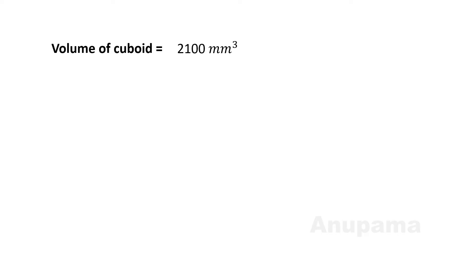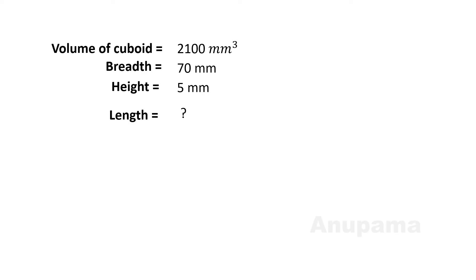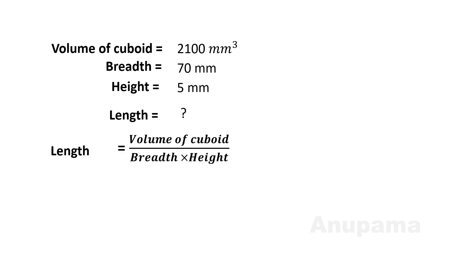Volume of cuboid equals 2100 mm³, breadth equals 70 mm, height equals 5 mm — find the length. Using the formula: length = volume ÷ (breadth × height) = 2100 ÷ (70 × 5). Seven 3s are 21, so we simplify: 2100 ÷ 70 = 30, and 30 ÷ 5 = 6. So the answer is 6 millimeters. You can similarly find breadth or height if the other three values are given.